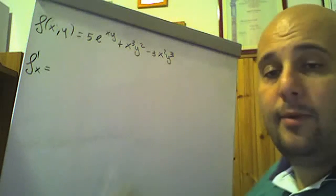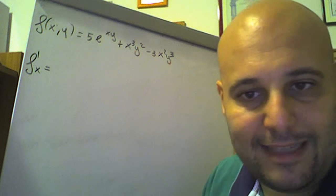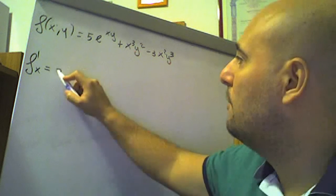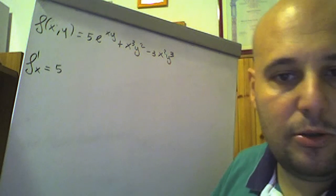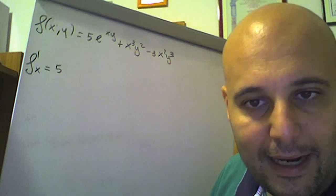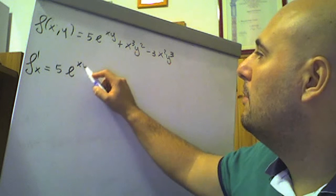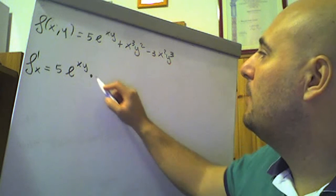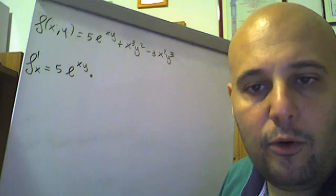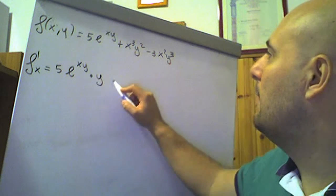La derivata di una somma algebrica è pari alla somma algebrica delle derivate, quindi vale sempre quella regola. 5 la posso portare fuori e posso derivare e alla xy rispetto alla x, che è la derivata di e alla f per f'. Naturalmente rispetto alla x: y è un numero, rimane fuori, derivata di x è 1, 1 per y.